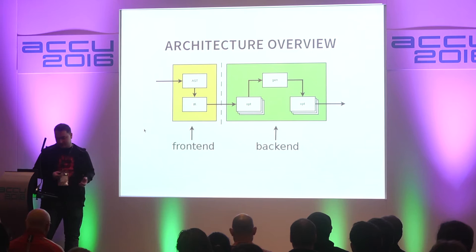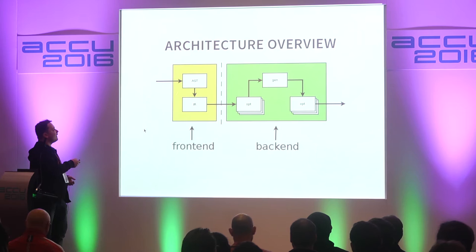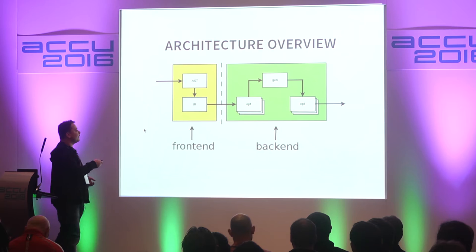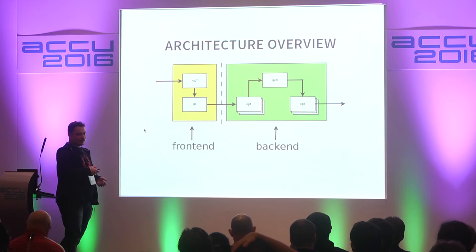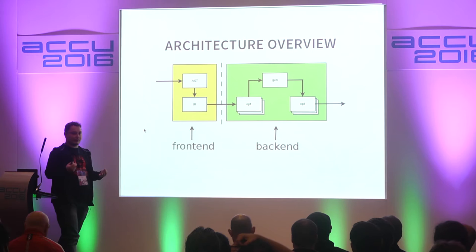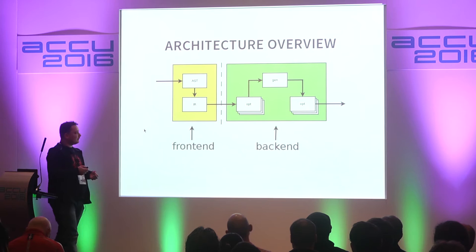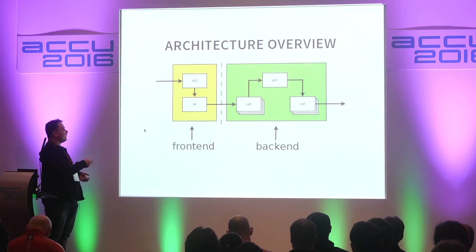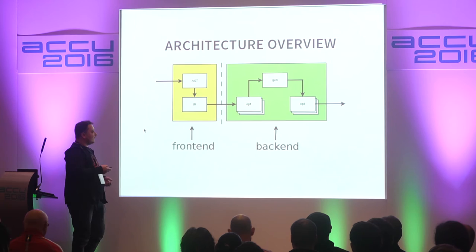How is this even possible? It's all possible due to the architecture of compilers, which is quite modular. We have a clear split between the frontend and the backend. The main responsibility of the frontend is to convert the input file into the internal representation of the compiler. This internal representation is the interface between the two. So if you want to support another language, you just unplug the frontend and plug in your own, and you're done.